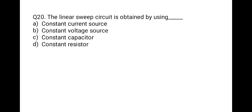The last question: a linear sweep circuit is obtained by using which of the following? Options: constant current source, constant voltage source, constant capacitor, or constant resistor. The correct option is A: constant current source.